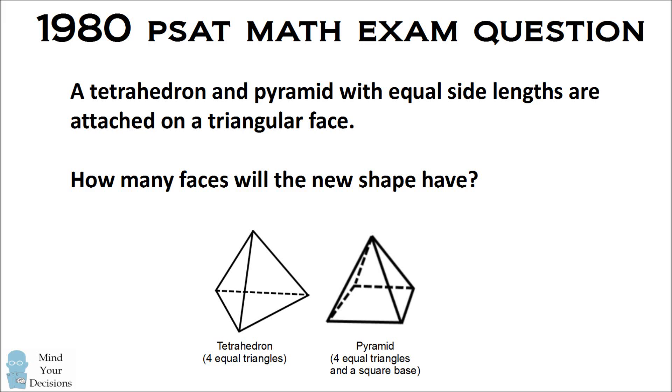A version of this problem appeared on the 1980 PSAT math exam. A tetrahedron and pyramid with equal side lengths are attached on a triangular face. How many faces will the new shape have?